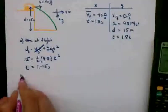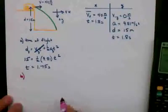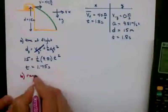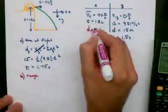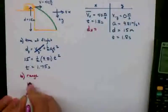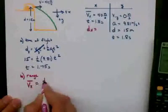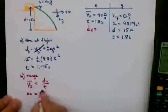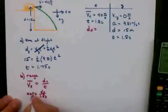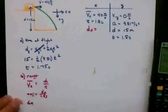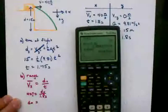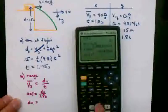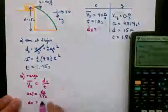All right, for part B, I want to find the range. The range is the distance this projectile moved in the x direction. So now that I have the velocity in the x and the time, I can get the distance in the x. So I'll plug in 40 and 1.8. And my distance in the x direction will be 40 times 1.8, 72 meters.